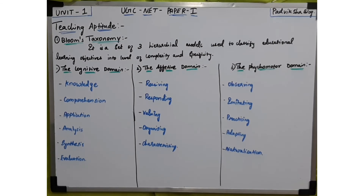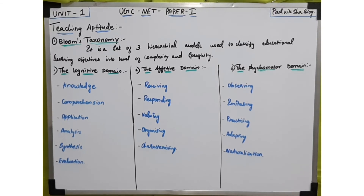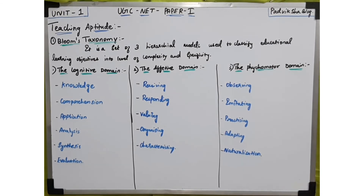We have finished the cognitive domain and affective domain. The last one is the psychomotor domain. The cognitive domain is knowledge and skill-based, the affective domain is based on emotions and feelings, but the psychomotor domain is action-based. The psychomotor domain is broken into five following levels.